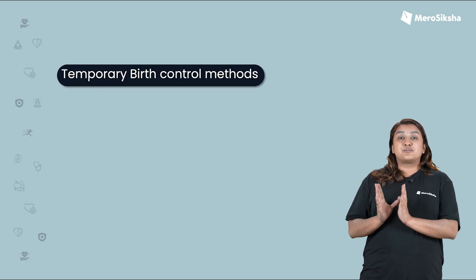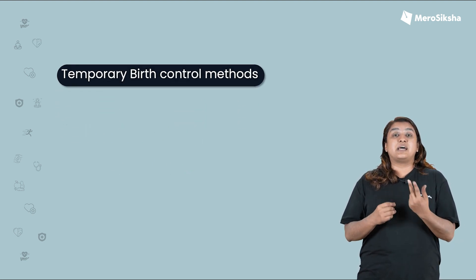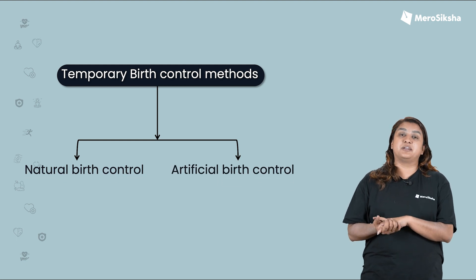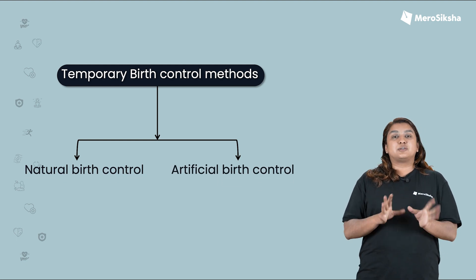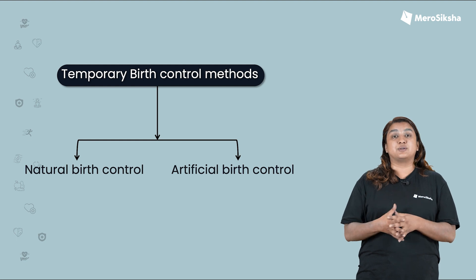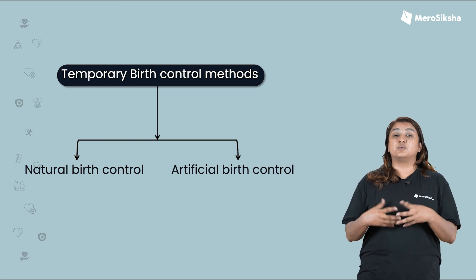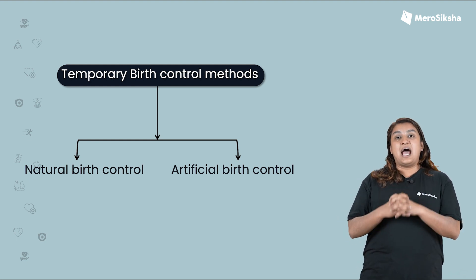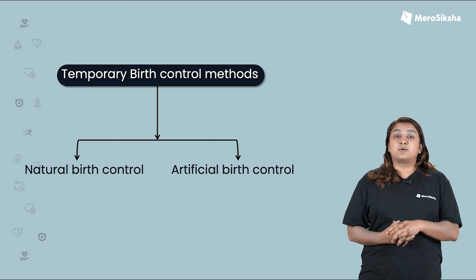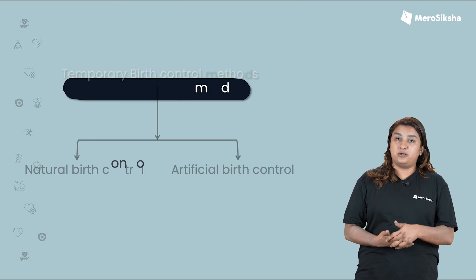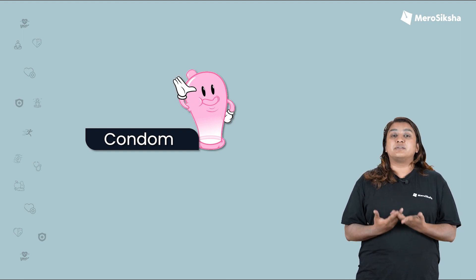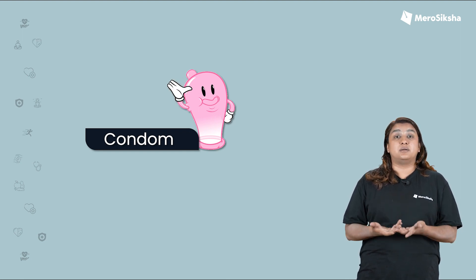Temporary birth control methods — we are learning about natural and artificial methods. Under artificial methods, we are learning about condoms and contraception.